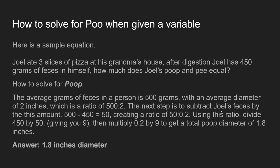The next step is to subtract Joel's feces by the average amount. So after subtracting, you get 50, and you've got to equal it out to both sides of the ratio. That equals 50 to 0.2. Using this new ratio, divide 450 by 50, and that gives you 9. Then multiply the other side of the ratio by 9, and that gives you 1.8. Our answer is 1.8 inches in diameter. Kind of a simple lesson today — only a few slides.